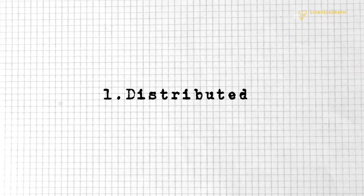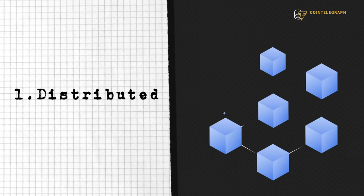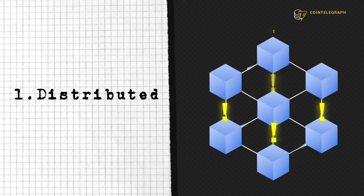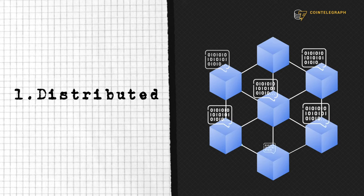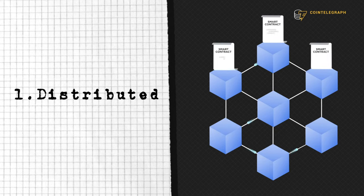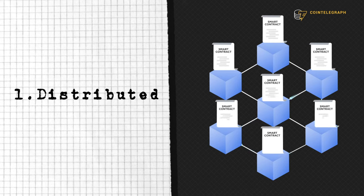Distributed. Each node in a blockchain network stores all the data for the network. You can think of nodes as small servers that are constantly pinging each other to make sure they all have the exact same data. This data includes smart contracts, which are replicated and distributed to all nodes in the network. This is the process that guarantees a smart contract on the network will execute.